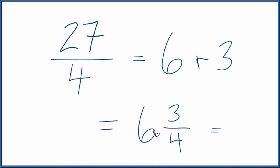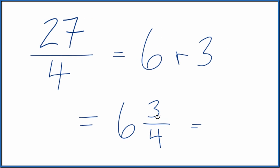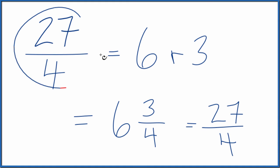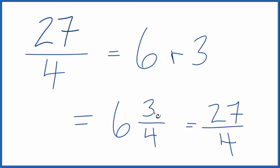We can multiply: 6 times 4 is 24, plus 3 gives us 27. Then we just take the denominator and put it there — that's the same thing as we got before. So 27 fourths and 6 and 3 fourths have the same value; they're equal. It's just that they're represented differently.